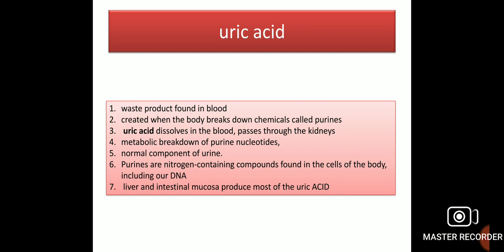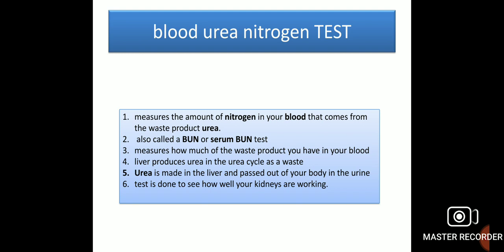Uric acid is a waste product found in the blood. It is created when the body breaks down chemicals called purines. Uric acid dissolves in the blood and passes through the kidneys. The metabolic breakdown of purine nucleotides results in uric acid. It is a normal component of urine. Purines are nitrogen-containing compounds found in the cells of the body, including our DNA. The liver and intestinal mucosa produce most of the uric acid.